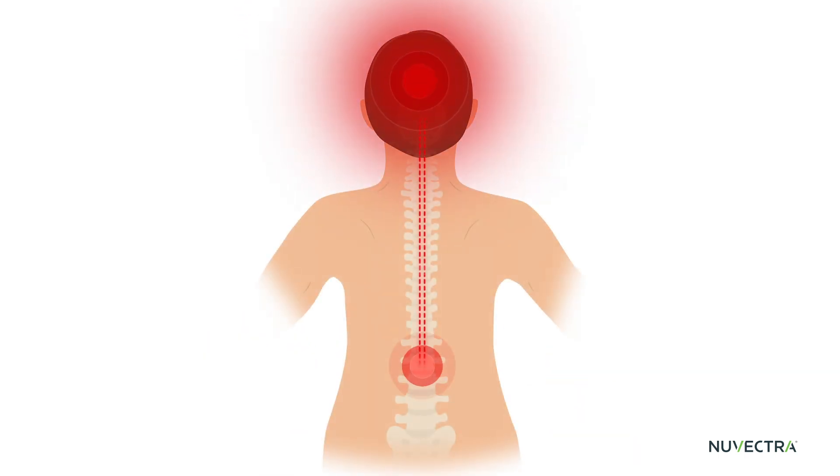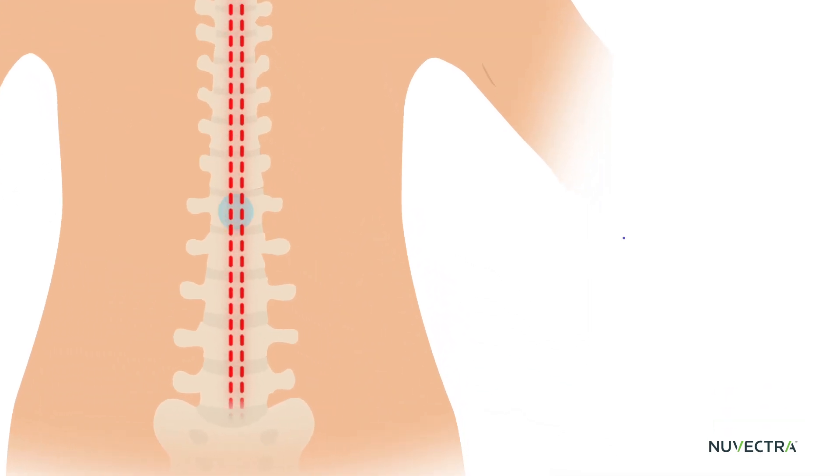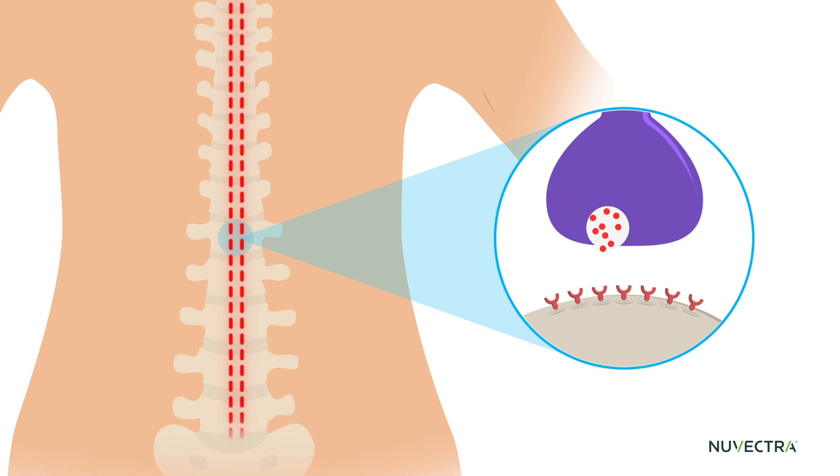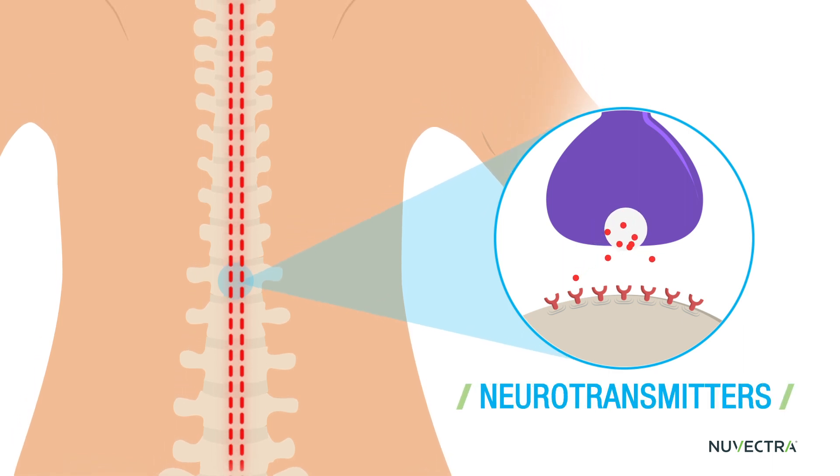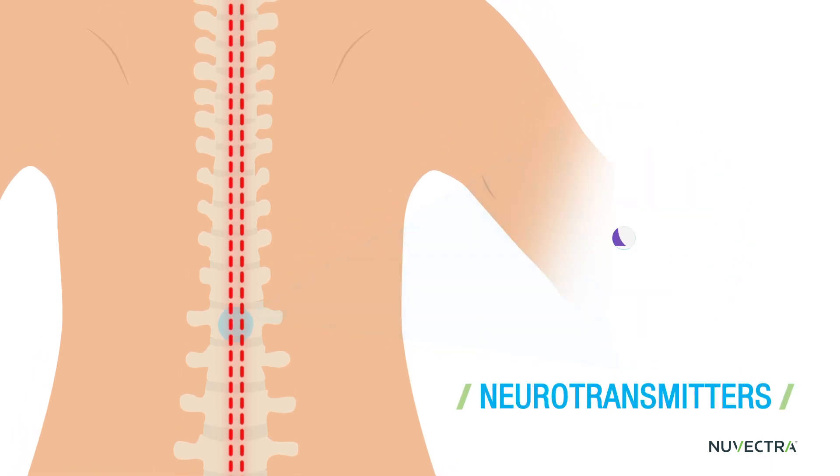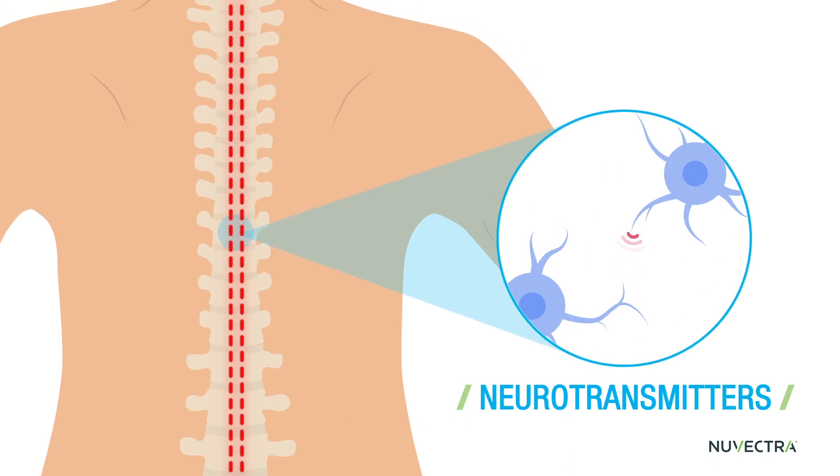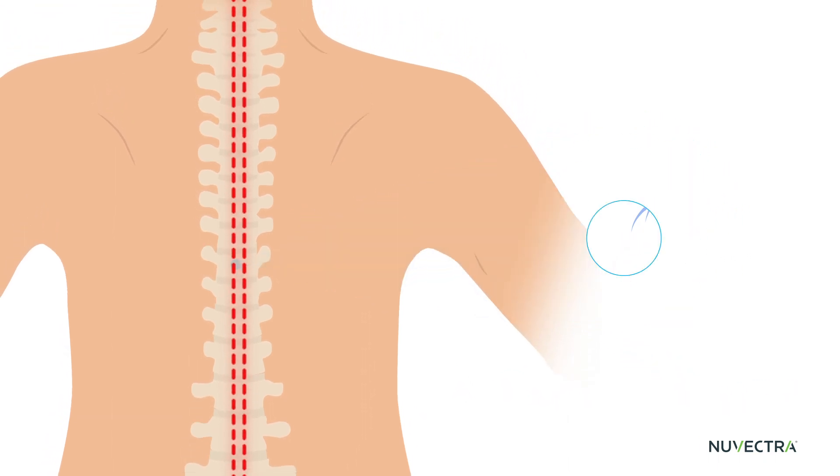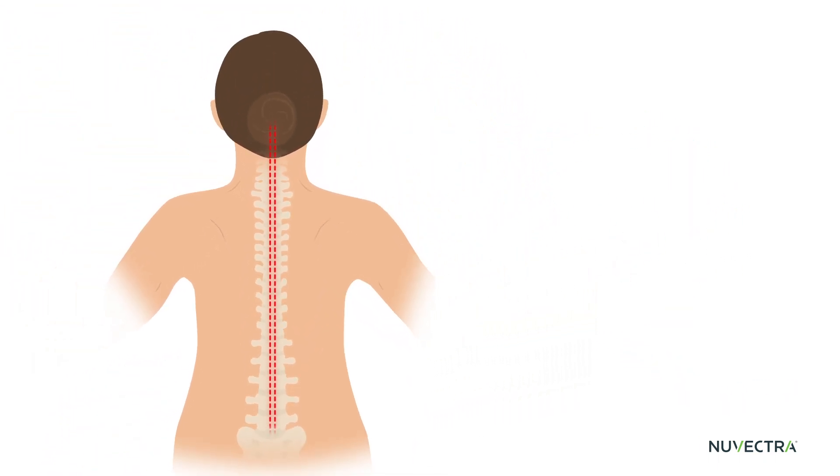SCS works by blocking or interrupting pain signals as they travel up the spinal cord to the brain. To feel pain, chemical messengers inside the spinal cord, called neurotransmitters, are released. These activate other nerves that pass signals to the brain. It feels instantaneous, but you actually don't feel pain until your brain receives a pain message.